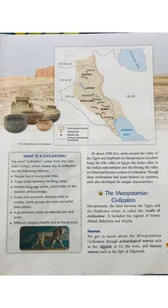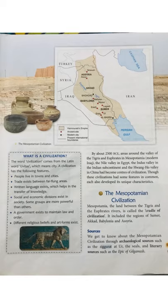Literary sources include the Epic of Gilgamesh. Literary means written, especially handwritten. Epic means very long and exciting — like the Mahabharata is an epic. Gilgamesh was a legendary king of a Sumerian city. The Epic of Gilgamesh is a poem — a book that contains poems — and it is also one of the oldest religious texts.